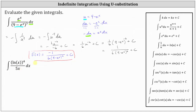Now looking at the second example: because the derivative of natural log x is equal to 1 divided by x, and we have an x in the denominator, we will let u equal natural log x. So if u equals natural log of x, then du equals the derivative of natural log x times dx, which is 1 divided by x, dx.